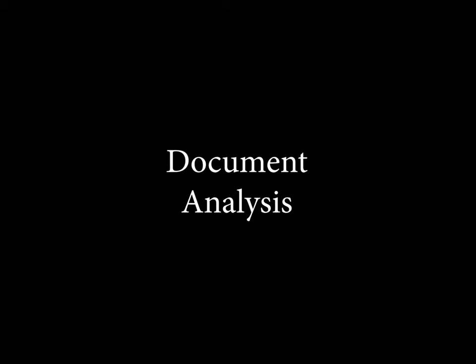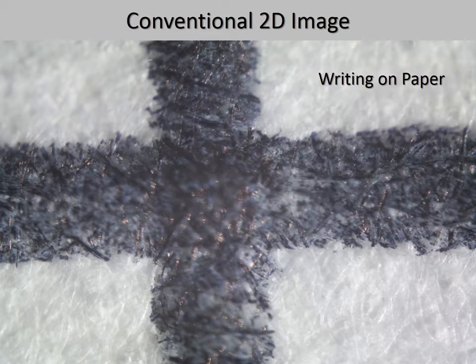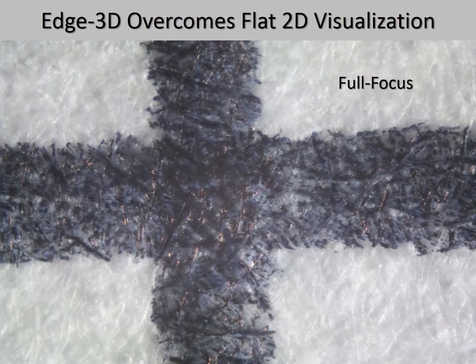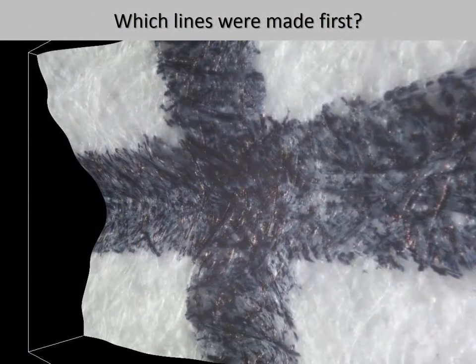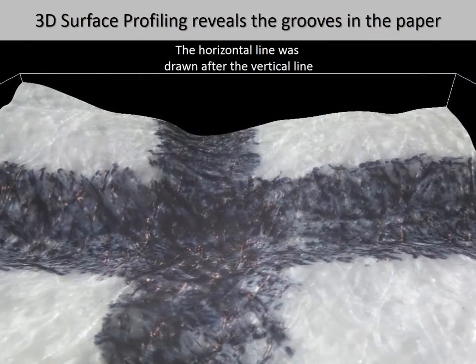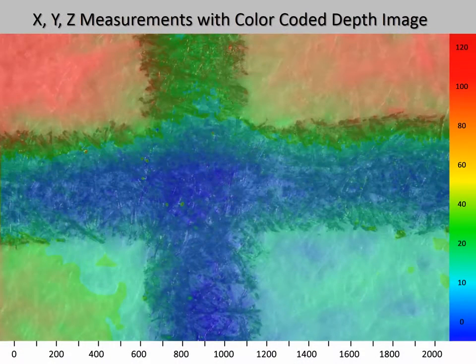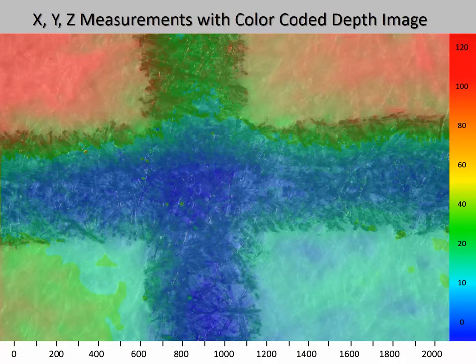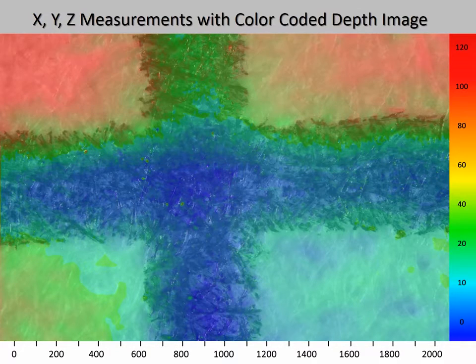Document analysis is an important area of forensic science to determine forgeries and counterfeits. Here is a two-dimensional image of two strokes of a ballpoint pen on paper, followed by a full focus image of the two strokes. The question is: which stroke was created first? A 3D model shows that the pen strokes create tiny grooves in the paper. The 3D model indicates that the horizontal line was drawn after the vertical line, and the color-coded depth image verifies this — the horizontal line created a continuous groove, whereas the groove in the vertical line was interrupted by the horizontal line, positively confirming the order.